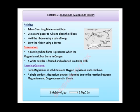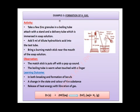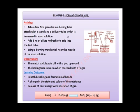The third example involves the formation of hydrogen gas, related to the evolution of gas during a chemical reaction. In this activity, zinc granules are taken in a boiling tube attached to a stand. A delivery tube is also attached and immersed in soap solution. The next step is to add 5 ml of dilute hydrochloric acid into the boiling tube.